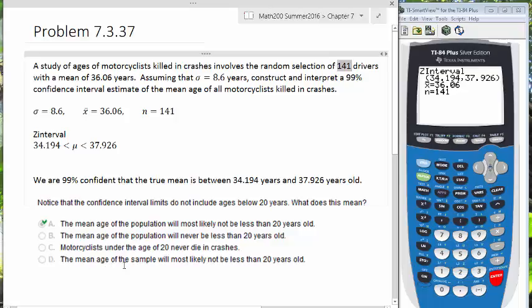And then the last one, option D: the mean age of the sample will most likely not be less than 20 years old. Our confidence interval makes inference or draws conclusions about the population mean. What we get in our sample mean is not totally irrelevant, but it's not taken into consideration. What we're looking at is drawing a conclusion about the population mean.